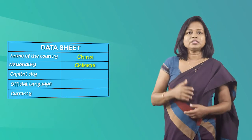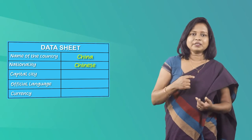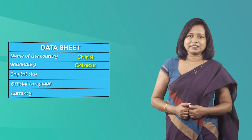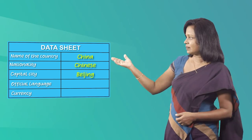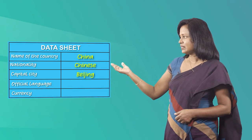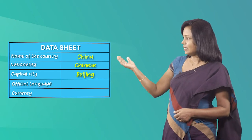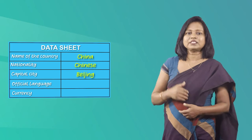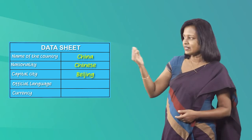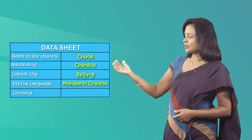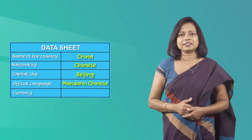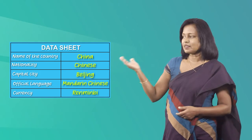Now the third one requires you to find the capital city. What is the capital city? It's Beijing. Now the fourth one — the official language in China. What is it? The official language is Mandarin Chinese. Now the last one — the currency. What is the currency? Yes, it's Renminbi.